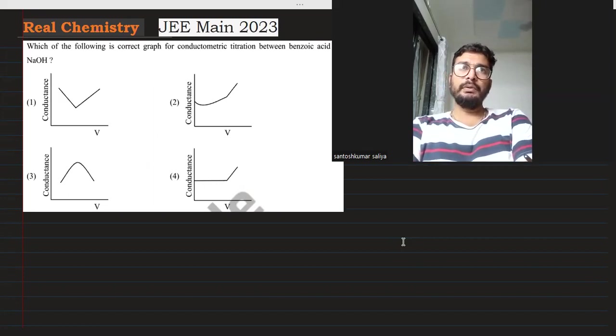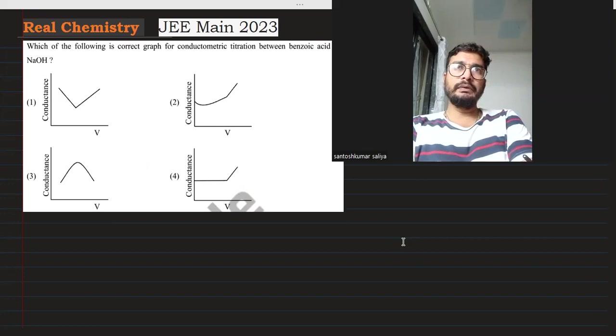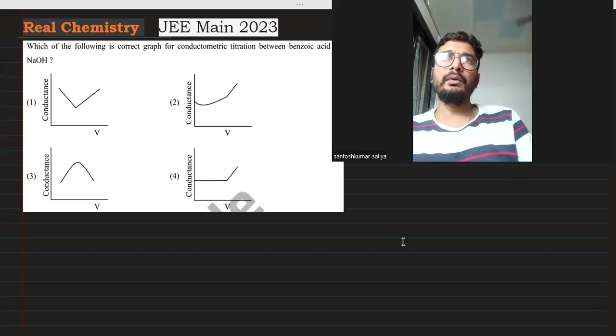Which of the following is the correct graph for conductometric titration between benzoic acid and NaOH?